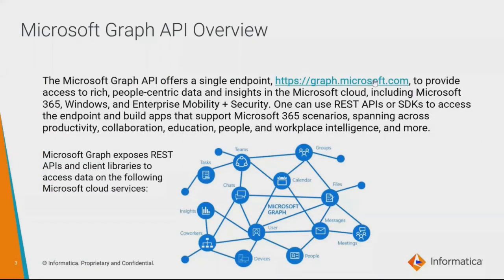The very first question would be: what is Microsoft Graph API? Microsoft Graph API offers a single endpoint to all Microsoft Cloud services. One can use REST APIs or SDKs to access these endpoints and build applications on top of them. Some of the major services accessible by Graph API are Teams, Groups, Outlook, Calendars, and many more.